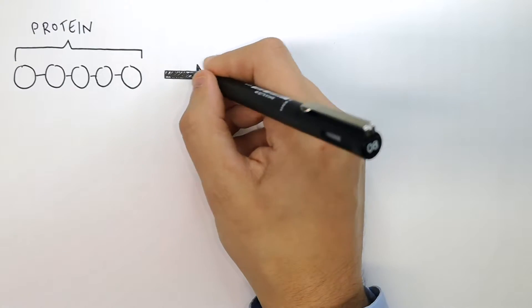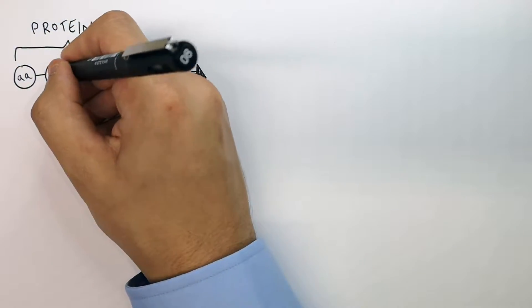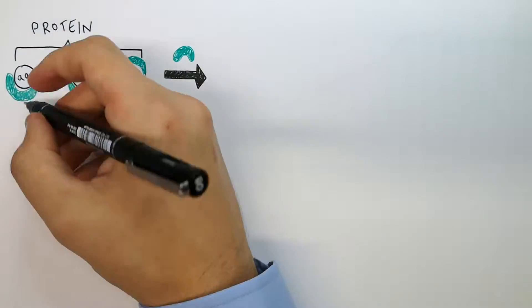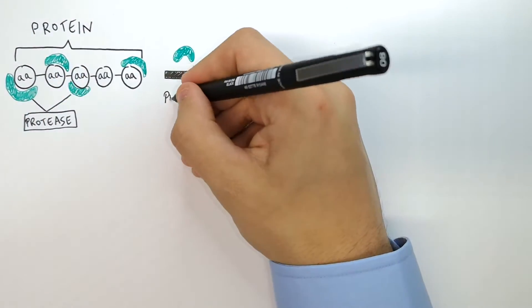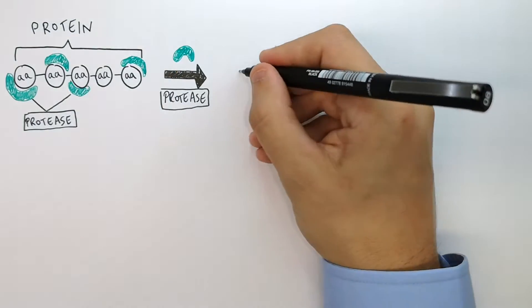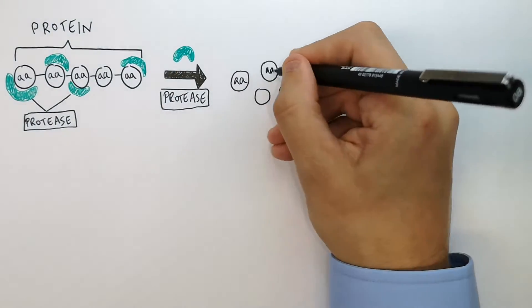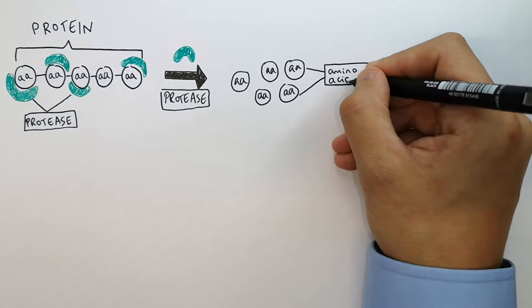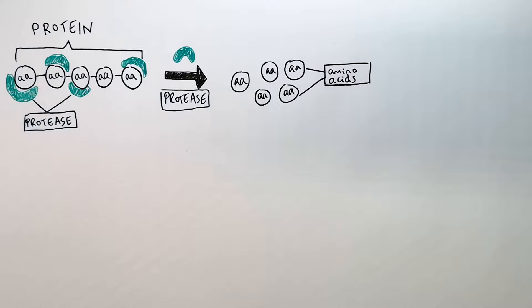Proteins are formed of amino acids bonded together and it is the enzyme protease that binds the substrate protein. It is the enzyme protease that breaks down proteins into amino acids. As you can see here, the protein is broken down into amino acids which is then used by the body.